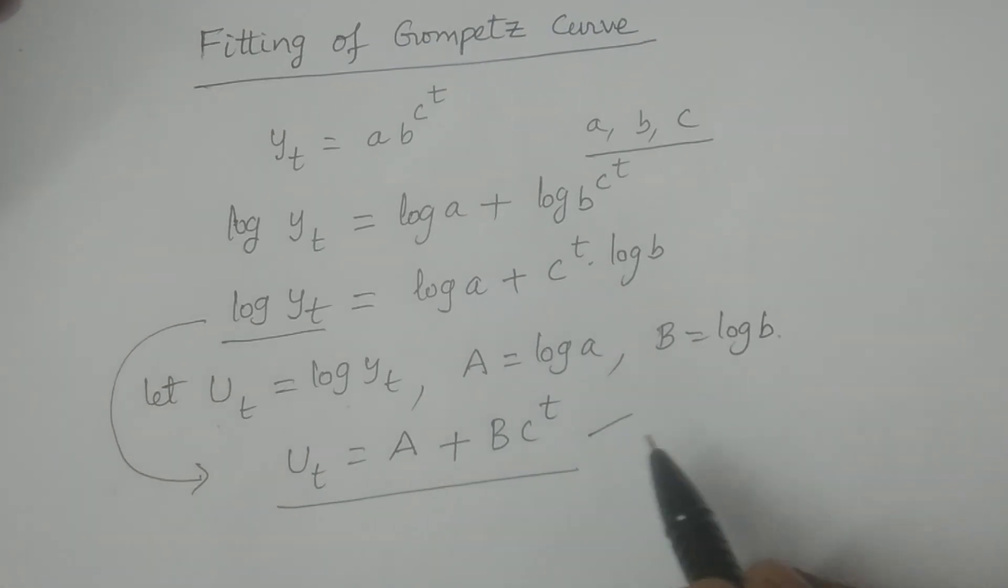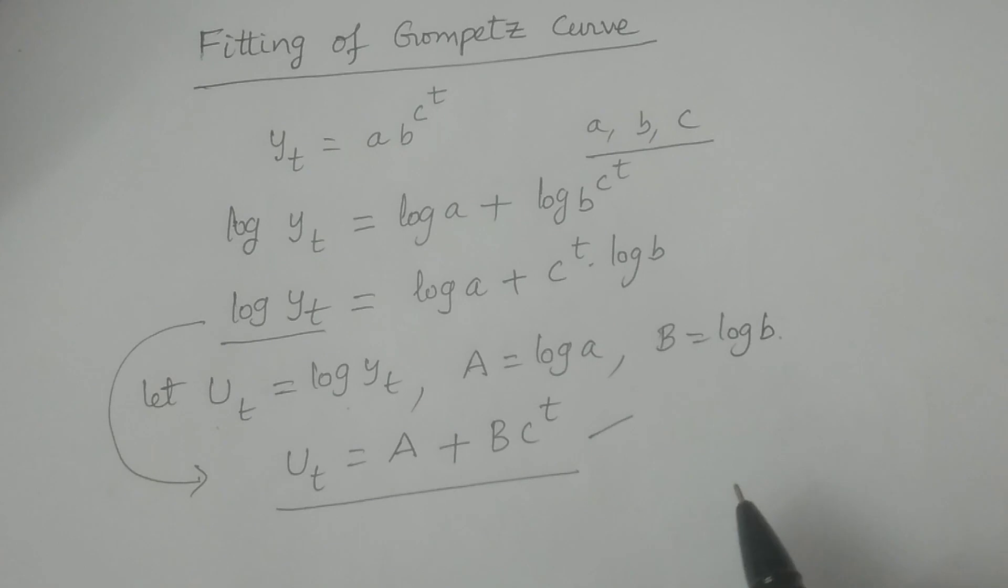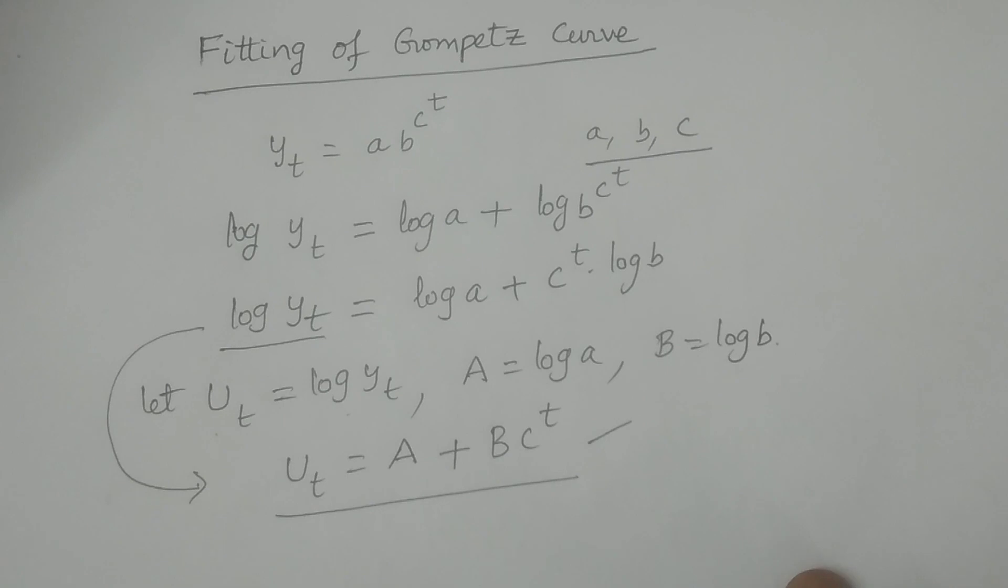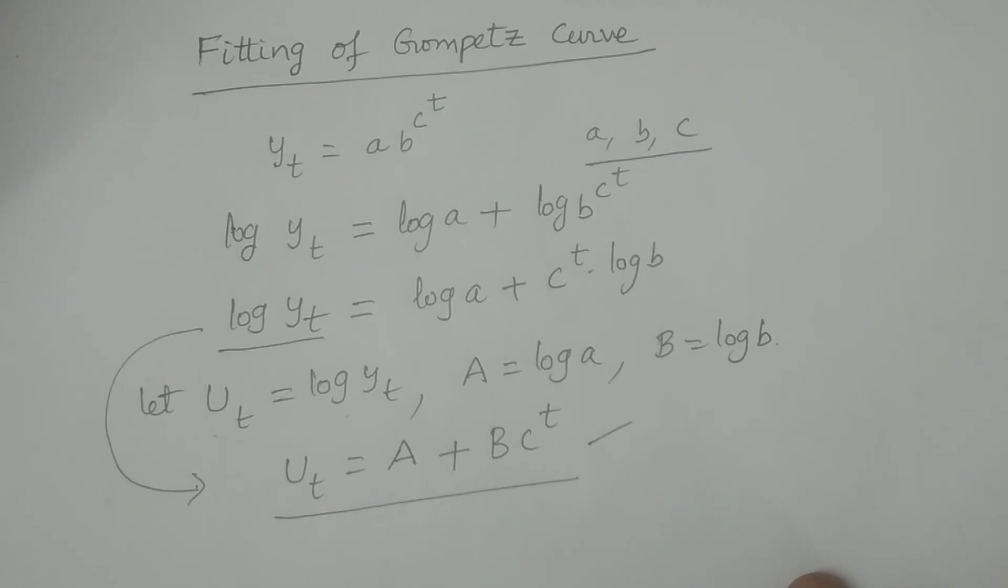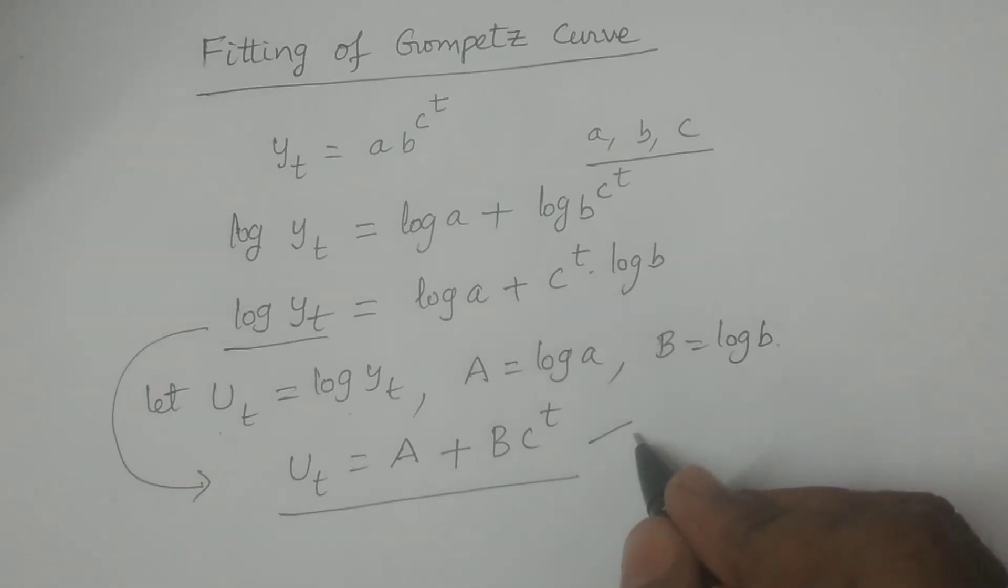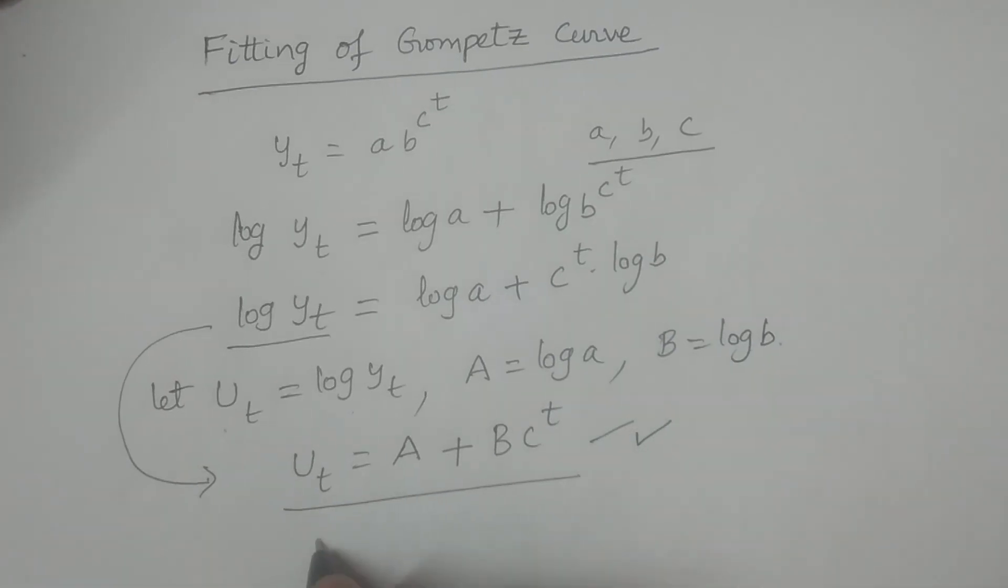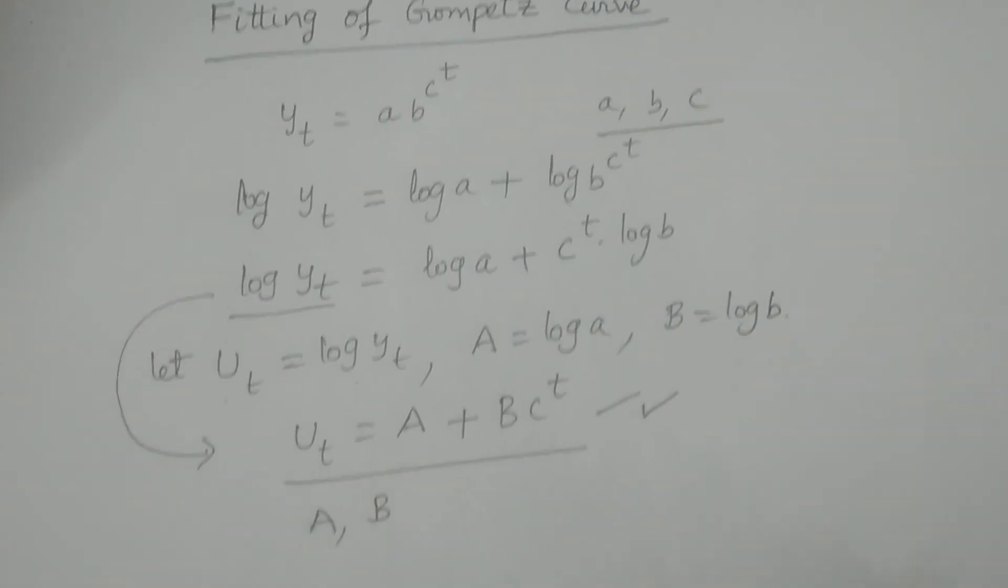What is this? This is modified exponential curve. We know how to fit the modified exponential curve. I have explained very clearly. By using two particular methods, we can fit the modified exponential curve. One, three selected points. Second one, partial sums. These are the two methods. By using any one of the methods, we fit this particular modified exponential curve. We calculate the parameters capital A and capital B.